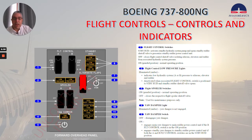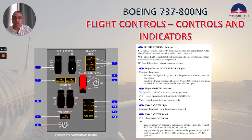Number 4, we have the yaw damper light — illuminated amber when yaw damper is not engaged. Yaw damper switch: off disengages the yaw damper. On engages the main yaw damper to the main rudder power control unit if the B flight control switch is in the on position, or engages the standby yaw damper to the standby rudder power control unit if both the A and B flight control switches are in the standby rudder position.